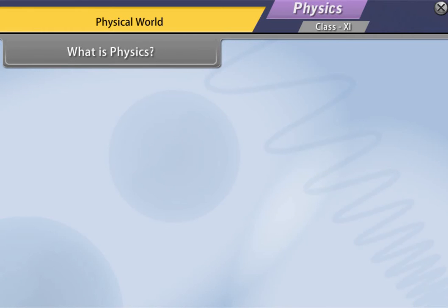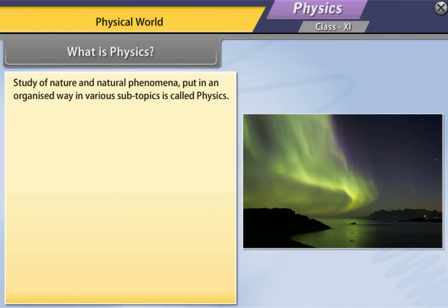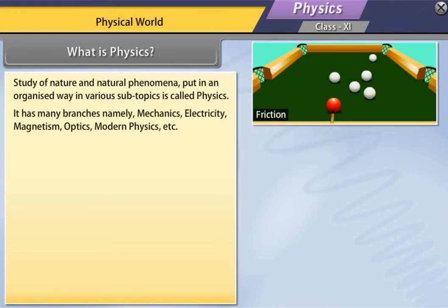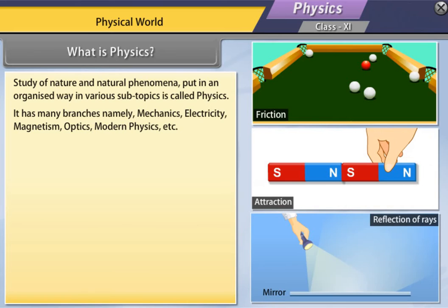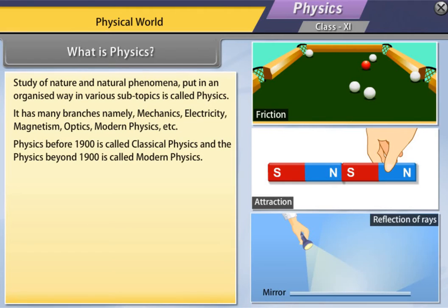What is physics? Study of nature and natural phenomena, put in an organized way in various subtopics is called physics. It has many branches namely mechanics, electricity, magnetism, optics, modern physics, etc. Physics before 1900 is called classical physics and physics beyond 1900 is called modern physics.